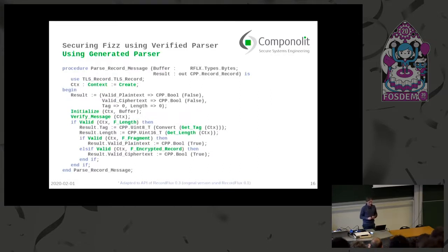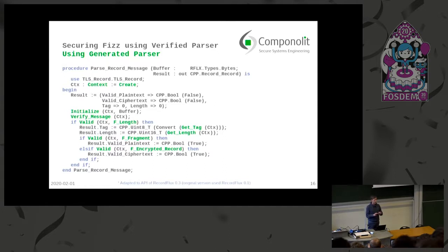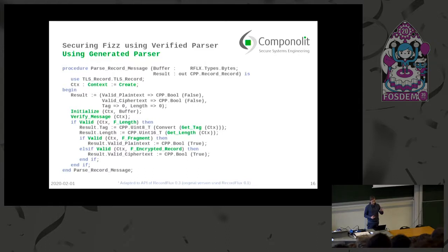Now we have created the verified parser and need to think about how to integrate it into FIS. As Spark and C++ are not compatible regarding data structures, we have to add some glue code in between. Here you see a Spark function which takes a buffer as input — just a pointer to a byte array — and gives a result record containing all information extracted from the message. A record in Spark is similar to a struct in C or C++. All functions and types highlighted in green are generated by RecordFlux.